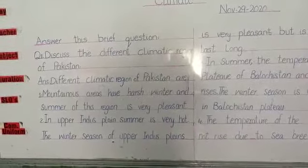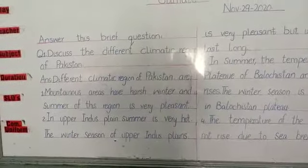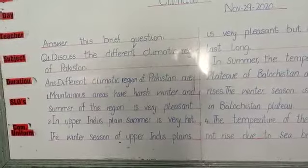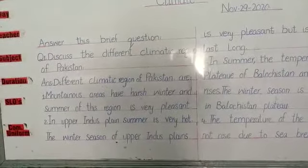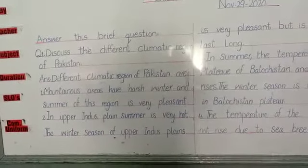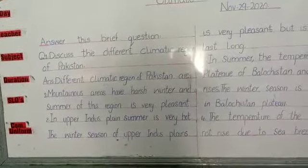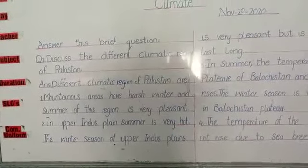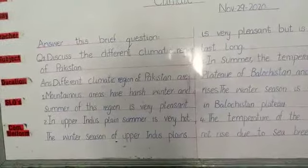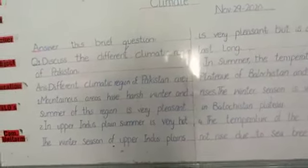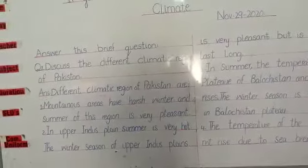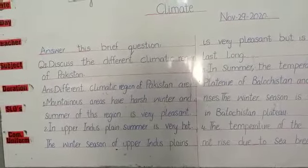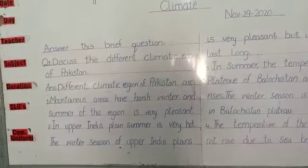Discuss the different climatic regions of Pakistan. The different climatic regions of Pakistan are: Number one, there are mountainous areas with harsh winters. These areas are very cold in winter. The summer of this region is very pleasant, and the winter season is very cold.